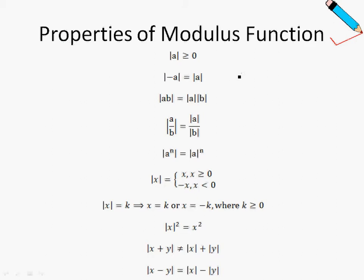Here is a list of the properties of modulus functions. I will highlight some of the key properties. For example, let's say we have the modulus of negative 5. Although negative 5 is a negative number, taking the modulus will mean that it becomes the modulus of 5, or simply speaking, positive 5. The modulus sign converts any negative number into a positive number.